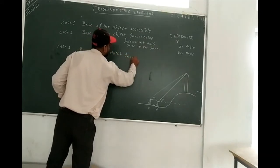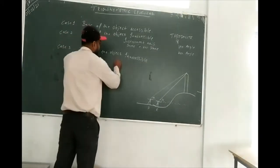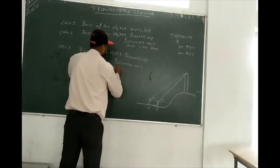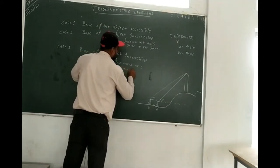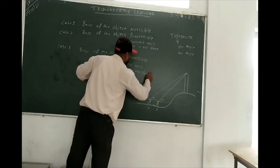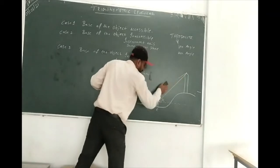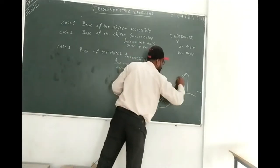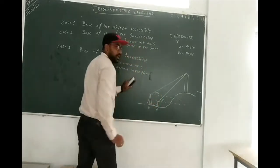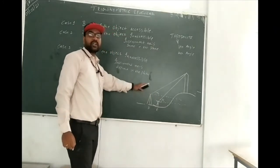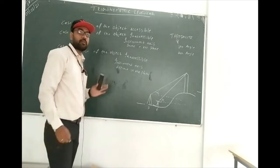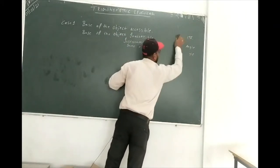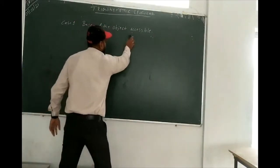In case three, the base of the object is also inaccessible, but here the instrument axes are at different levels in the vertical plane. Instrument P is slightly higher than instrument R. The angle from P towards the top edge of the object is alpha 2. These are the three cases we're going to cover.